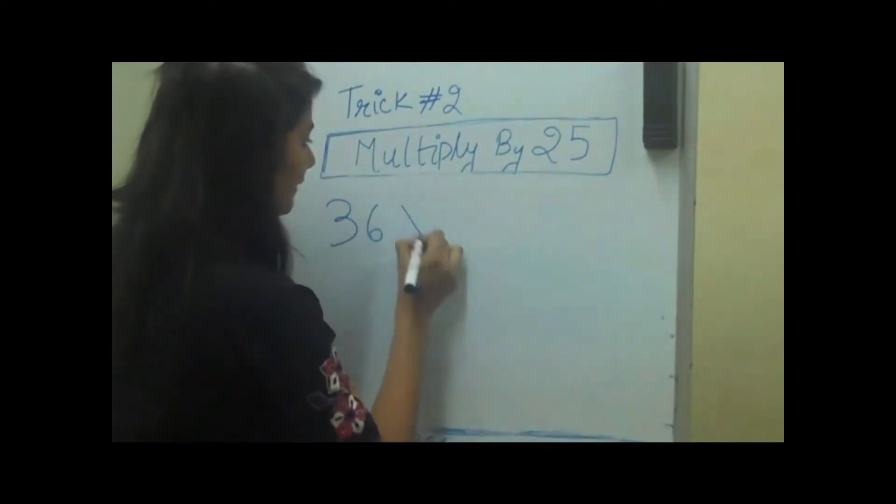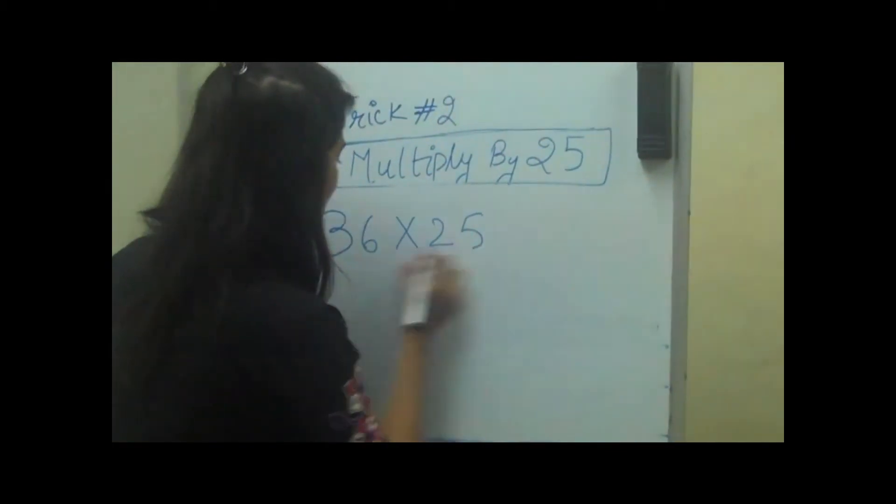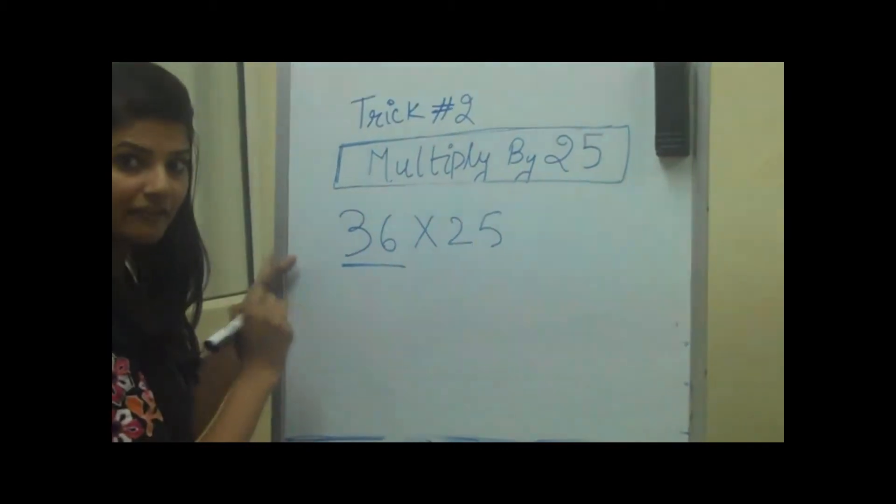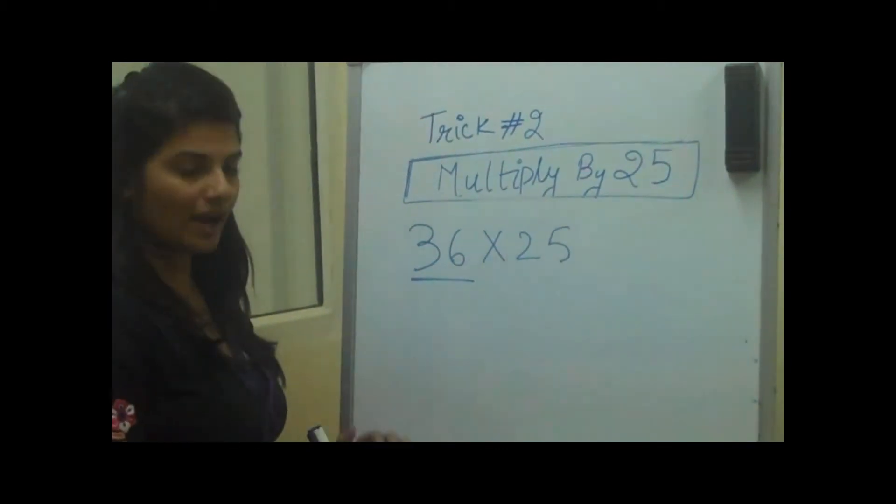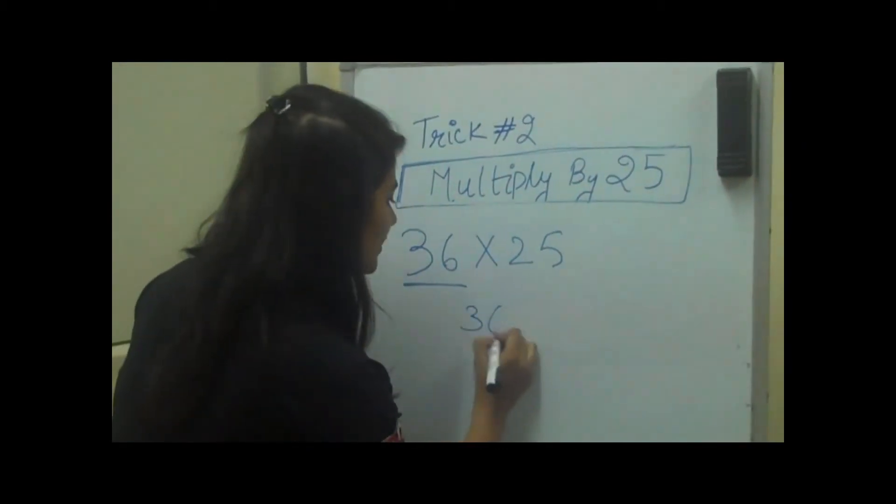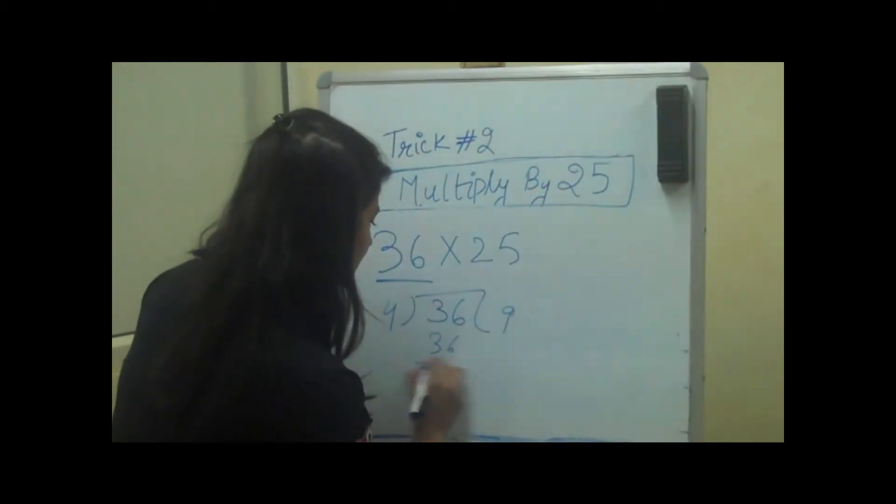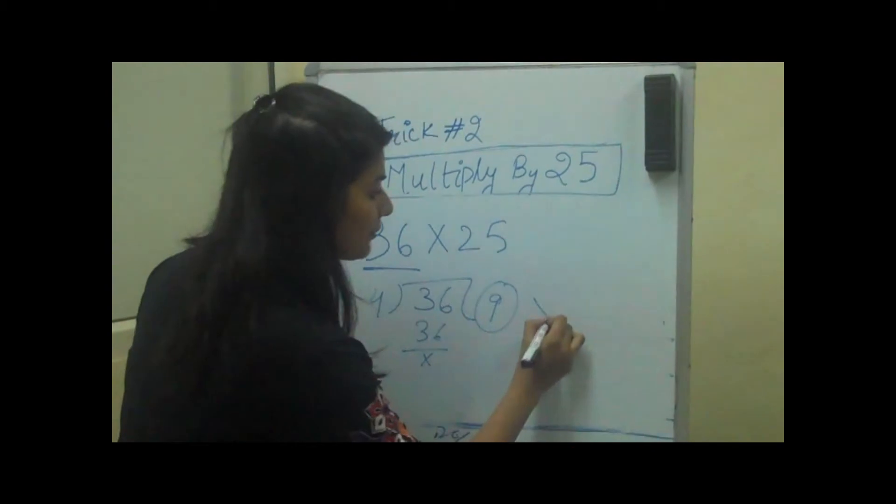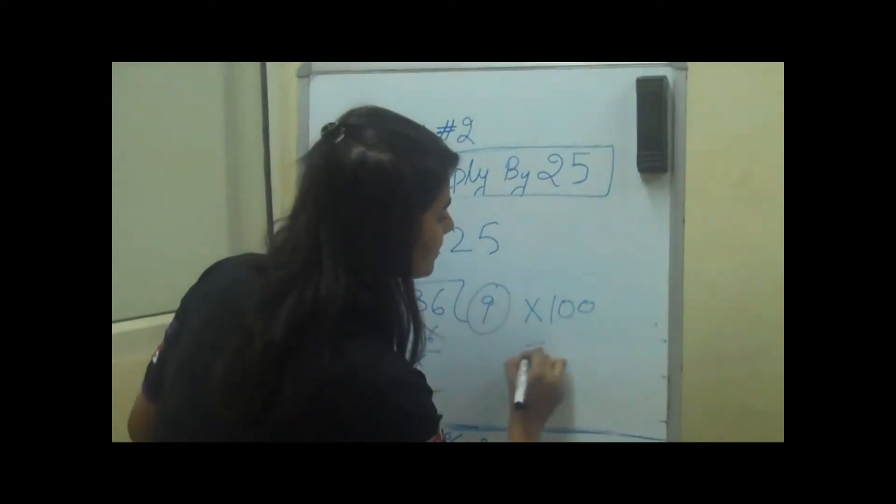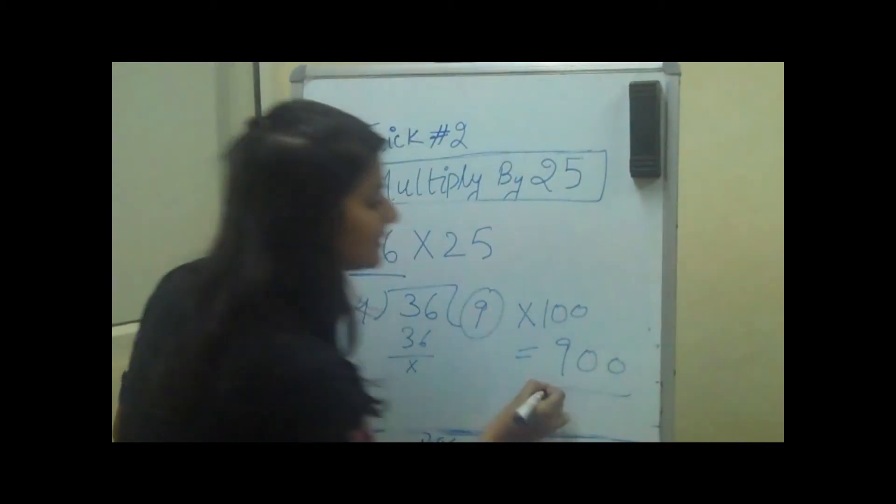If we have a number 36 and we want to multiply it by 25, first we will divide this number by 4 and then we will multiply it by 100. 36 divided by 4 gives us 9, and when we multiply it by 100, it makes 900. It's that simple.